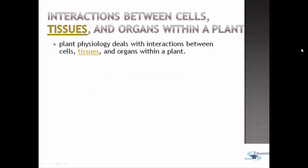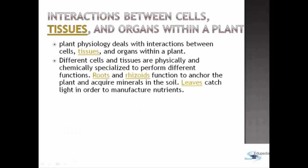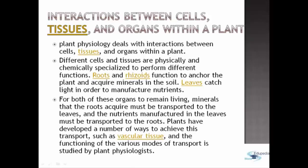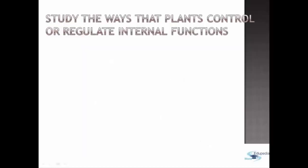Plant physiology also includes the interactions between cells, tissues, and organs within a plant. Different cells and tissues are physically and chemically specialized to perform different functions. Roots and rhizoids function to anchor a plant and acquire minerals from the soil. Leaves catch light in order to manufacture nutrients. For both of these organs to remain living, minerals that the roots acquire must be transported to the leaves, and the nutrients manufactured in the leaves must be transported to the roots. Plants have developed a number of ways to achieve this transport, such as vascular tissue, the functioning of which is studied by plant physiologists.